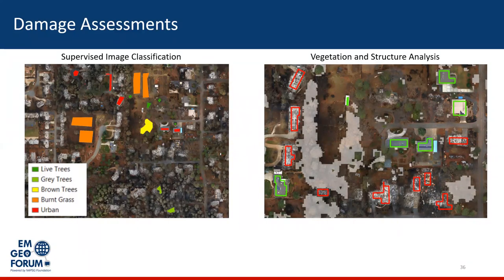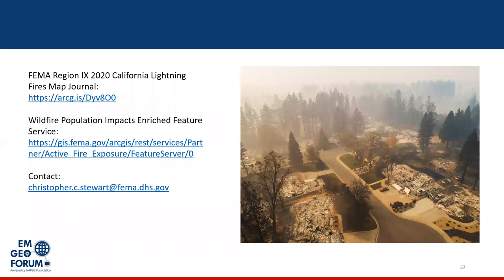This is what some of the automated image classification looks like. We were able to differentiate from this imagery where live trees and burnt trees and grass are, where structures are, and differentiate between non-burnt and burnt structures. The idea is that the faster we can perform these damage assessments, the faster we can assist our survivors with getting into housing and getting back on their feet. Remote sensing is just another tool in the toolbox for that. That's a high-level overview of FEMA Region 9's wildfire response tools and workflows, and a demonstration of some of the data and web applications we use to inform situational awareness, response, and recovery.